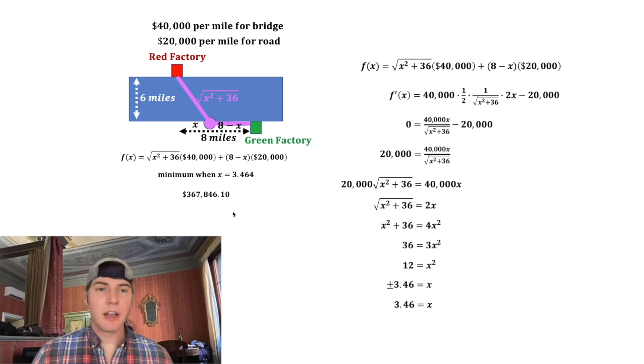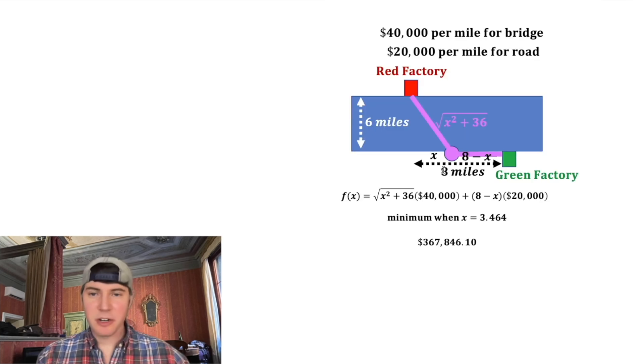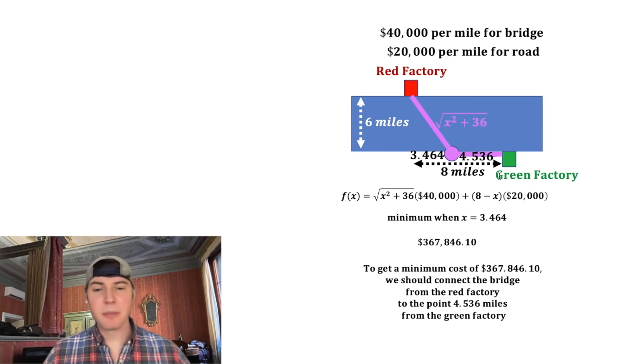For those of you who know calculus, this can be done without a calculator. Here's the work, and I was able to do all this without a calculator. The only part you might even want to use a calculator for is knowing that √12 is approximately 3.46. This x is 3.464, that'll make this piece 4.536. In conclusion, to get the minimum cost, we should make a bridge from the red factory to the point that is 4.536 miles from the green factory.